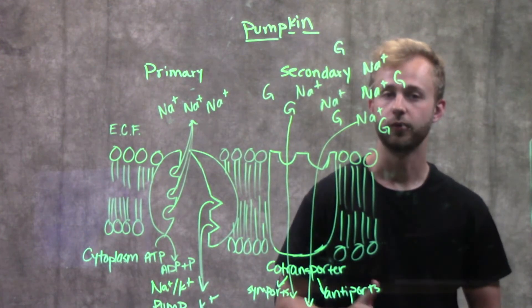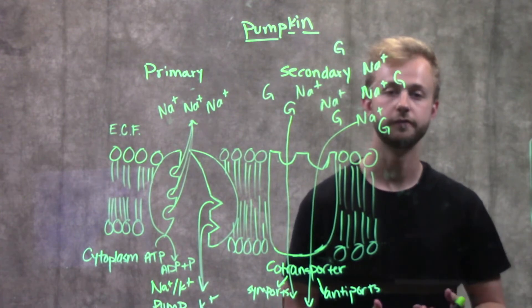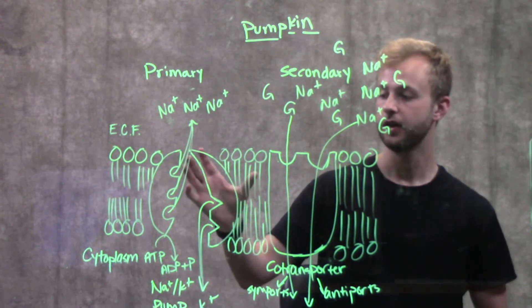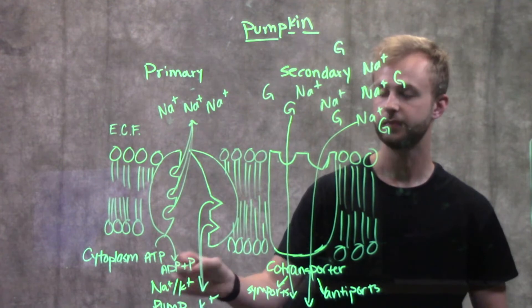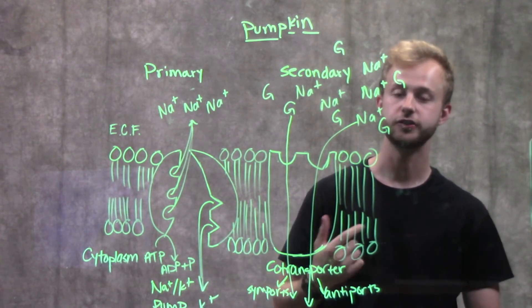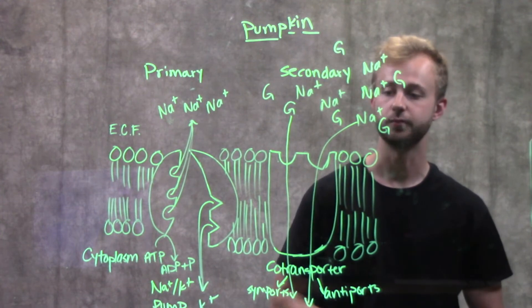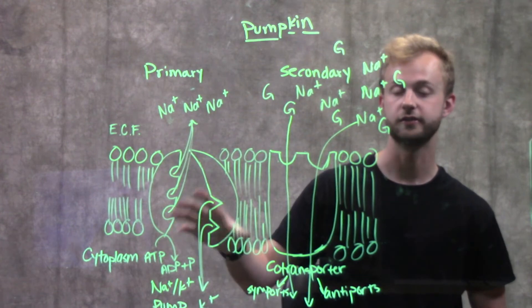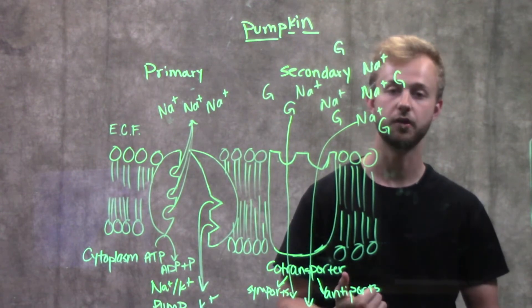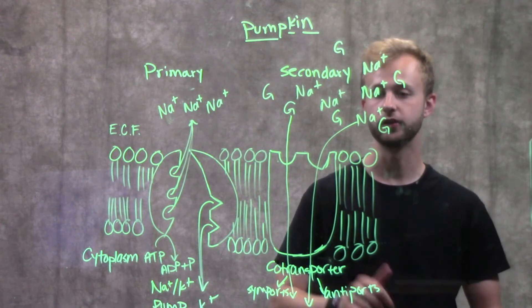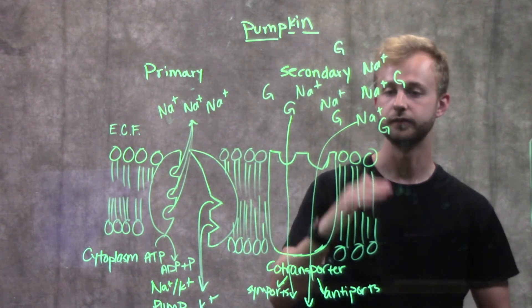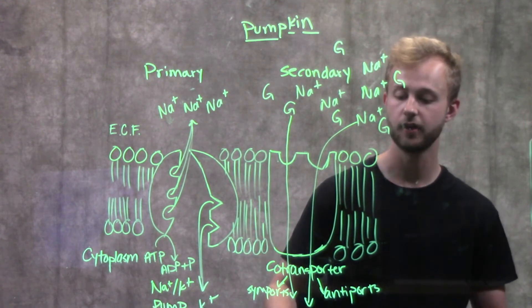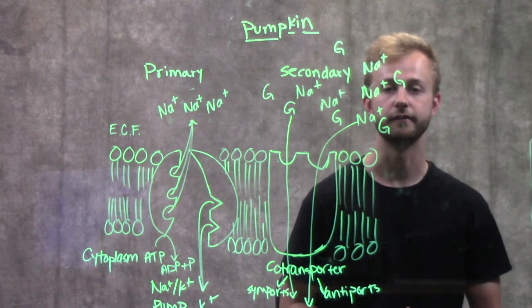So to review, active transport requires that the cell use some of its energy in the form of ATP to pump things against its concentration gradient. In primary active transport, the protein is going to be directly binding to ATP and hydrolyzing it and using that energy to transport things. And then in secondary active transport, we're going to use a concentration gradient set up by primary active transporters like the sodium-potassium pump to then transport a second molecule against its concentration gradient, either in the same direction as the sodium in this case if you have a sim-porter, which is what the sodium-glucose co-transporter is, or in opposite directions if you have an anti-port.